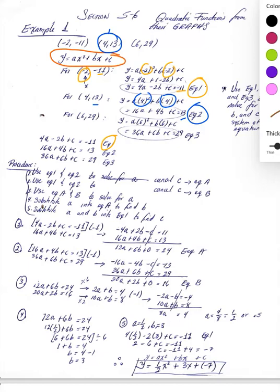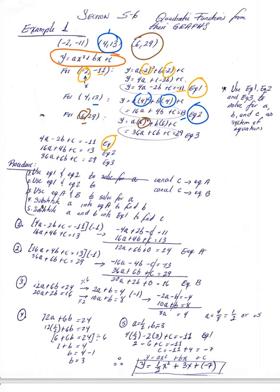For equation number three, you have the point (6, 29). You substitute x equals 6, so 6 squared is 36, giving you 36a plus 6b plus c equals 29. This is equation number three.